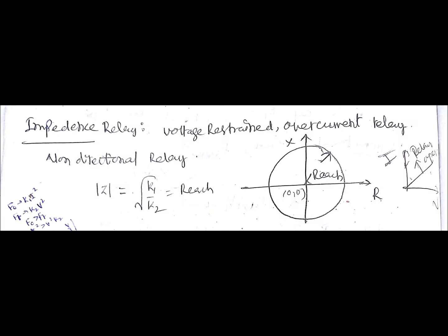Welcome to the most important type of relays, that is distance relays. There are mainly three types of distance relays: impedance relay, reactance relay, and admittance relay — admittance means mho relay. These are the important points we are going to go through here.